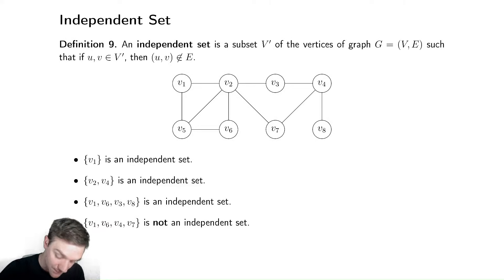One independent set would be V1, which is not connected to anything else. Let's look at more interesting ones. V2 and V4 - notice they are not connected by an edge. There's a path to them, but all I care about is whether there's a direct edge between them.